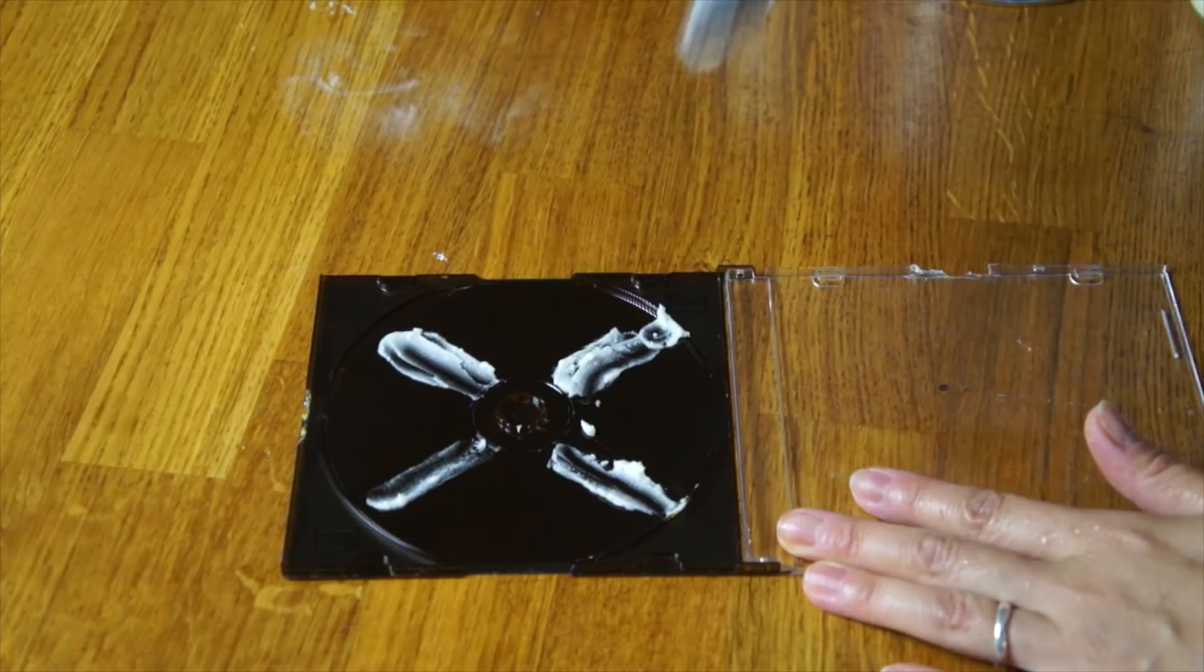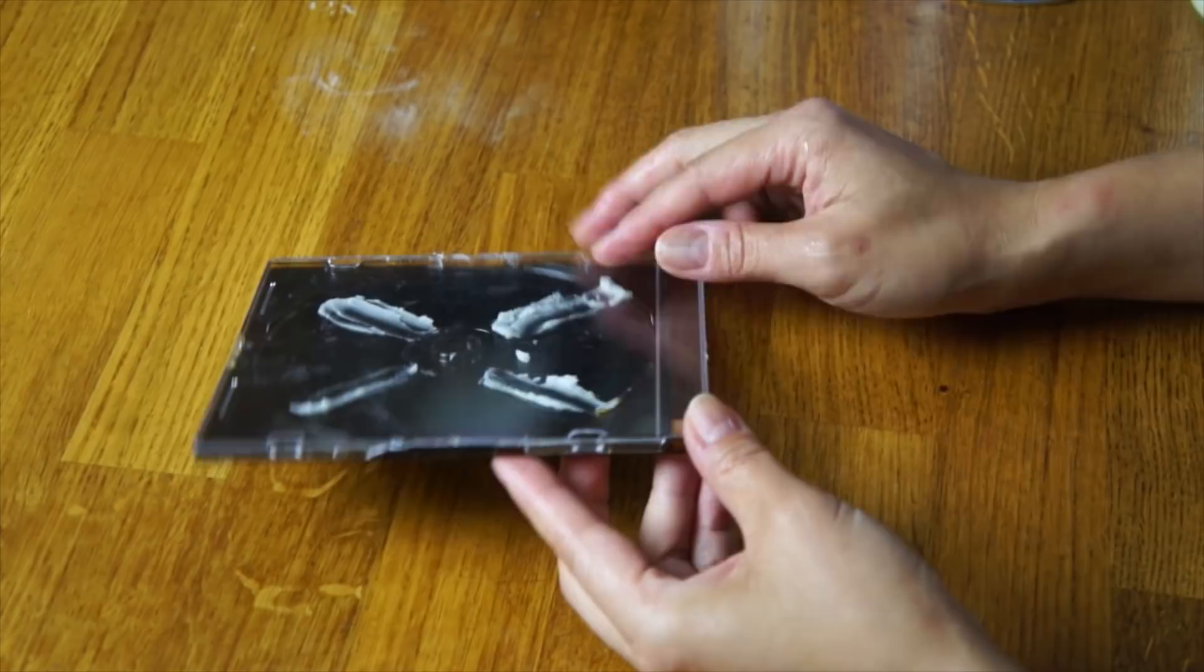Close it up. Then we're going to slide this into the hive. We're going to put this on the bottom board and make sure the beetles have access to the holes. I'm going to put it on the bottom board in the very back of the hive.